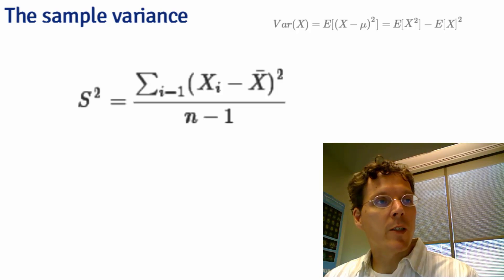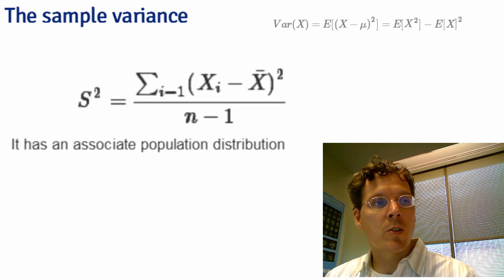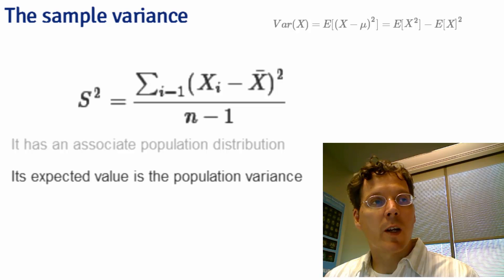Let me remind you that the sample variance is exactly a function of data, so it is also a random variable. Thus it also has a population distribution. That distribution has an expected value, and that expected value is the population variance that the sample variance is trying to estimate.